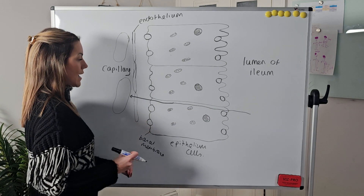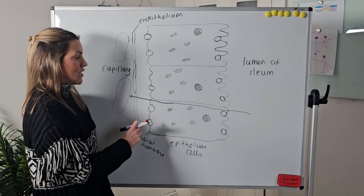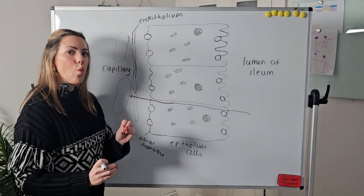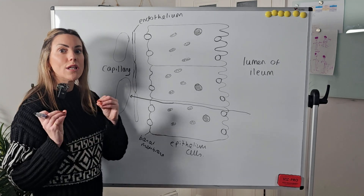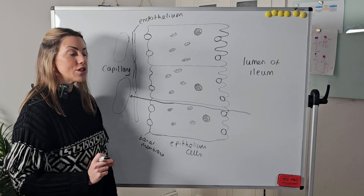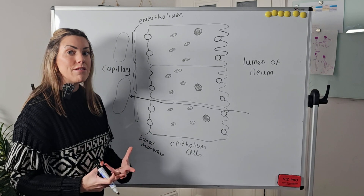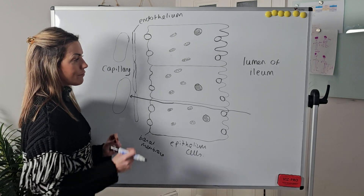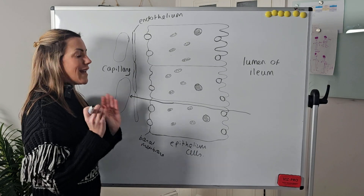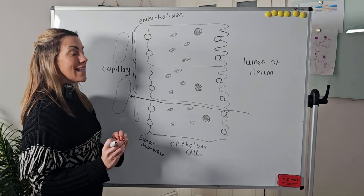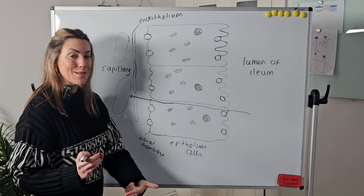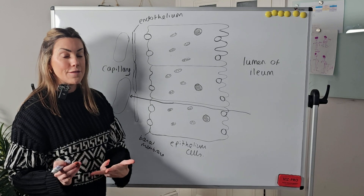To get from the lumen into the bloodstream it has to cross the epithelial cells, then some tissue fluid, then the endothelium — which is the wall of the capillary, a single layer of flattened cells — and then it can reach the blood in the capillary, where it will be carried by the blood plasma.